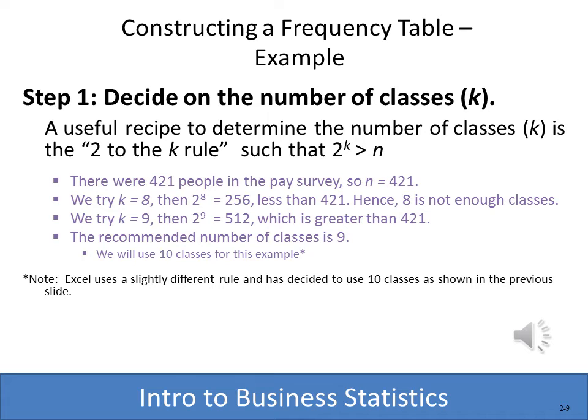Our first step in creating a frequency distribution table with numeric values is to decide on the number of categories or classes, which we designate with the letter K. A useful formula is: 2 to the power of K should be greater than the number of people in the survey. There were 421 people in that survey, so n is 421. We try K as 8 — 2 to the 8th power is 256, which is less than 421, so we don't use 8. We try 9 — 2 to the 9th power is 512, which is larger than 421. So using that formula, we would select 9 classes. However, we're going to use 10, because we're computing this in Excel, which uses a slightly different rule and comes up with 10. We could also use 9 and that would work just as well.